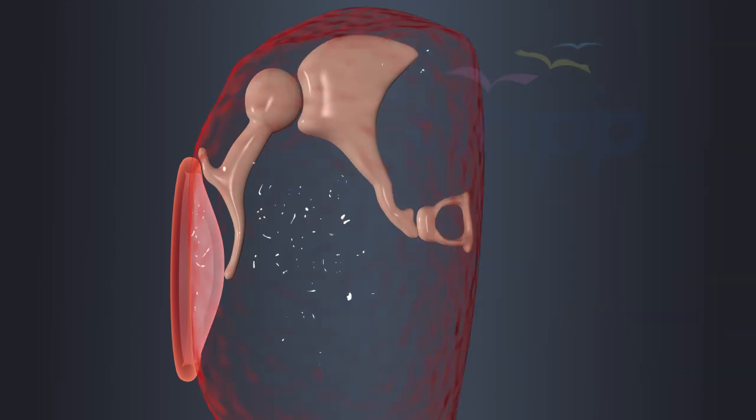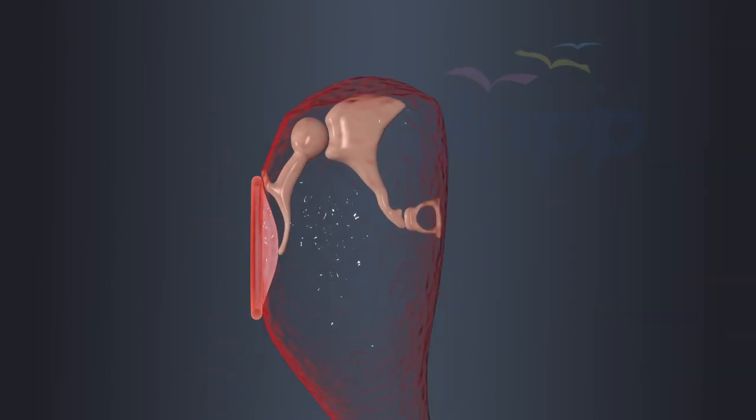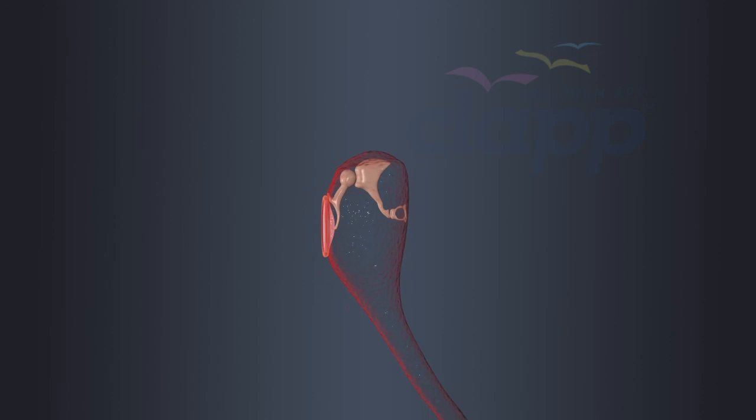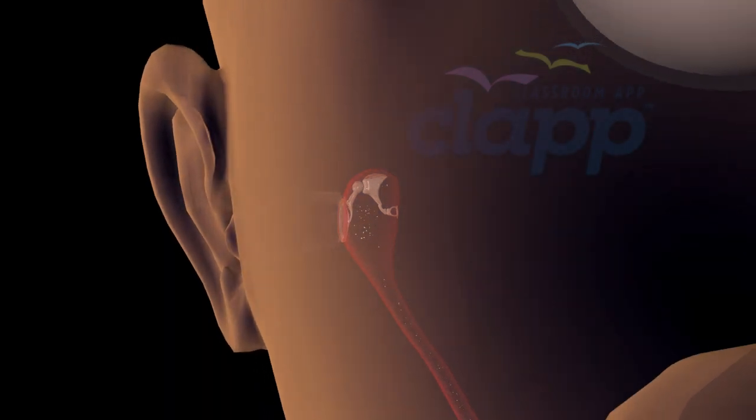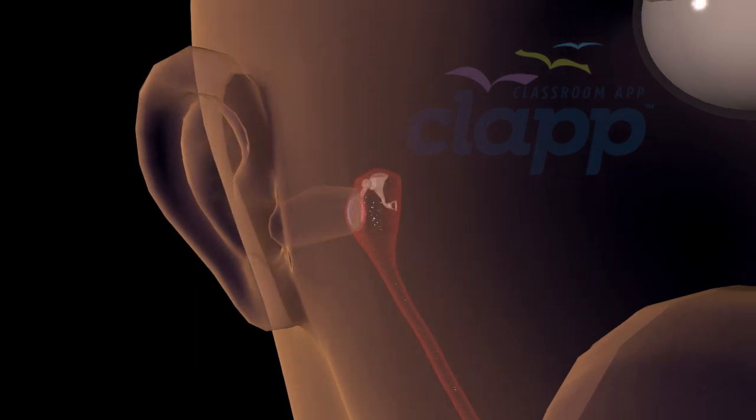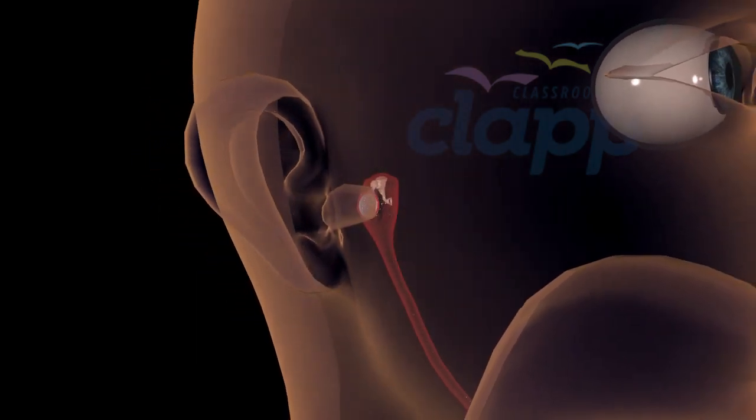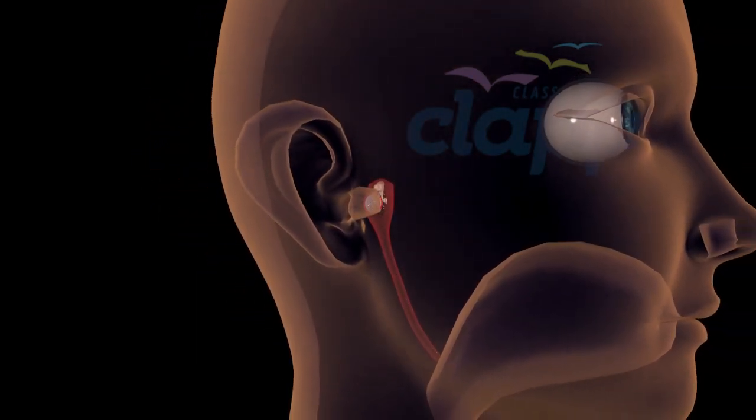In summary, the middle ear acts as a mechanical amplifier, transforming sound vibrations from the tympanum into fluid movements in the inner ear. The middle ear also has a crucial role in maintaining the correct air pressure in the ear.